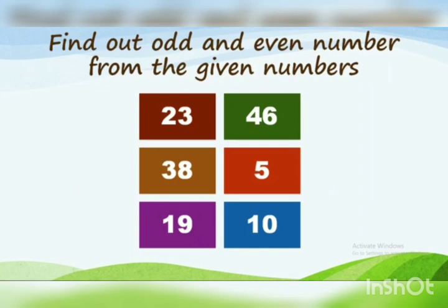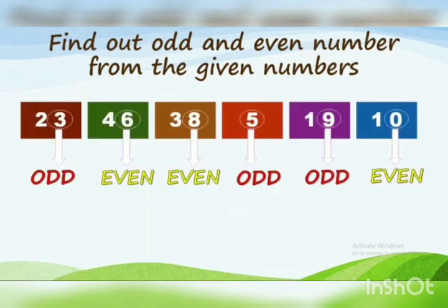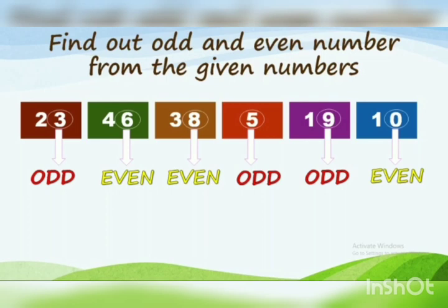Now let us try to find out the odd and even numbers from the given numbers: 23, 38, 19, 46, 5, and 10. First number is 23 — 3 is at one's place, so 23 is an odd number. We have to see only the last digit at one's place. Next number is 46 — 6 is at one's place, so 46 is an even number. Next is 38 — 8 is at one's place, so 38 is an even number. Next is number 5 — 5 is at one's place, so 5 is an odd number.